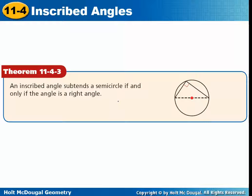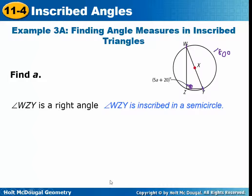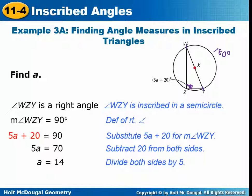An inscribed angle subtends a semicircle if and only if the angle is a right angle. If a right angle is 90 degrees, then its intercepted arc would be 180 degrees, and 180 degrees is a semicircle. If we know this is a diameter, the arc is 180 degrees — half of 360 — which means this angle must be a right angle. So you can set 5A plus 20 equal to 90 and solve for A.